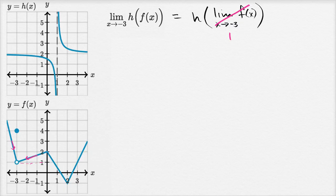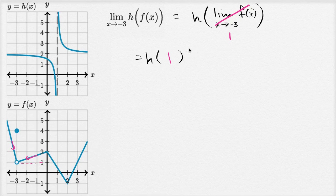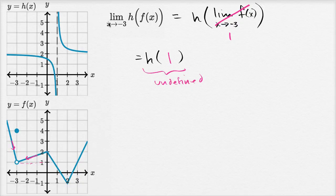So now we just have to evaluate h of one. But when we look at this graph at x equals one, this function does not look defined — h of one is actually undefined. So in this case, this limit would not exist. The limit of f of x was fairly straightforward, but when we tried to take that output and put it as an input into h of x, h wasn't defined there.